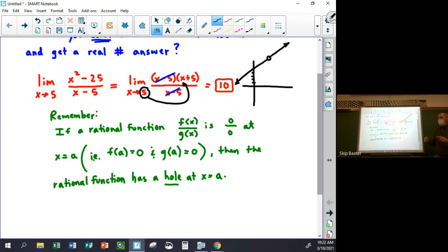Bottom line, what you need to do is, if you get 0 over 0, simply factor the top, factor the bottom, cancel common factors, and then try again. Plug the number in again. And if you get a number, then you're done.